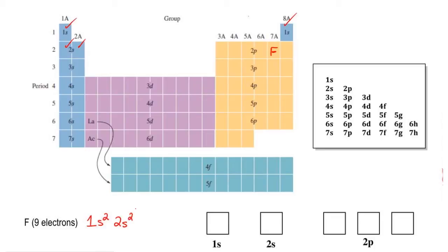Now F is found in the 2p section and we have to land directly on top of it. So 2p, 1, 2, 3, 4, 5. That lands us right there. So that would be the electron configuration of fluorine by using this version of the periodic table.